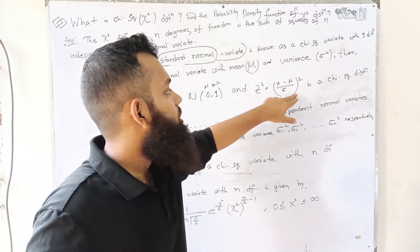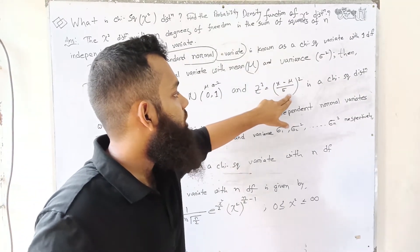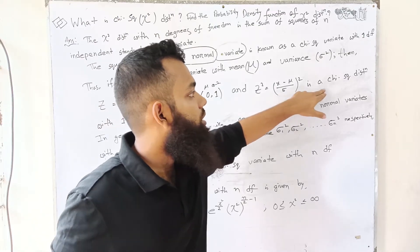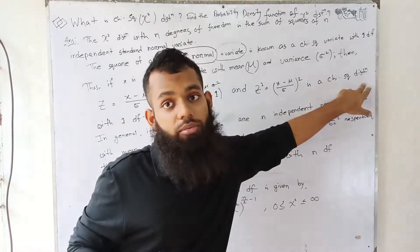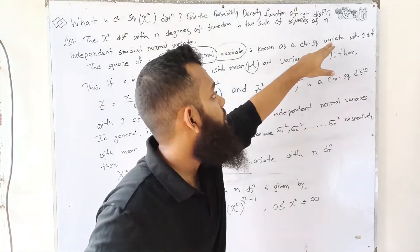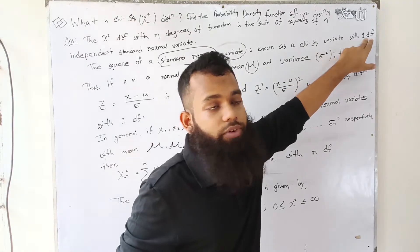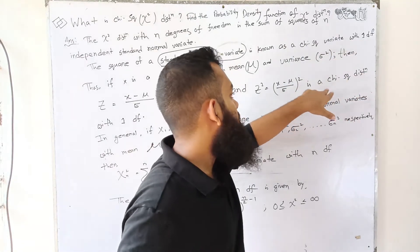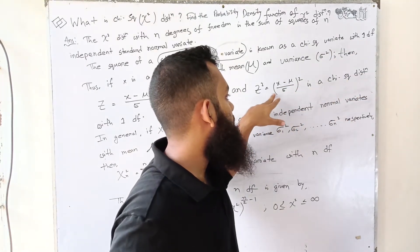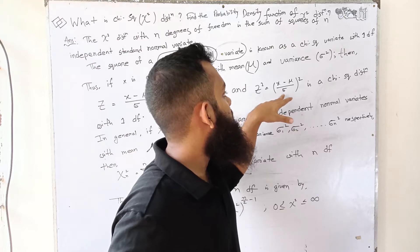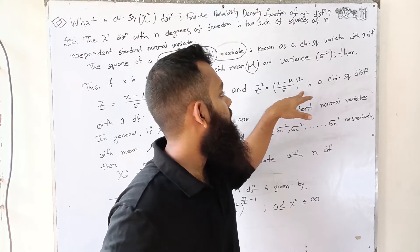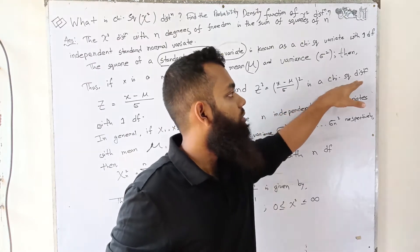z squared, the standard normal variate squared, equals (x minus mu divided by sigma) whole squared, which is a Chi-square distribution with one degree of freedom.